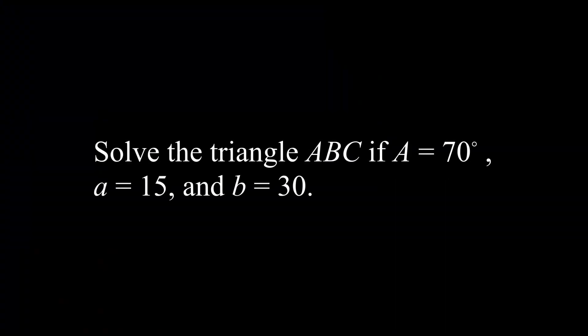So for our first one, we want to solve the triangle ABC without a picture, where we have that A is 70 degrees, small a, the side length is 15, and small b, the side length is 30.